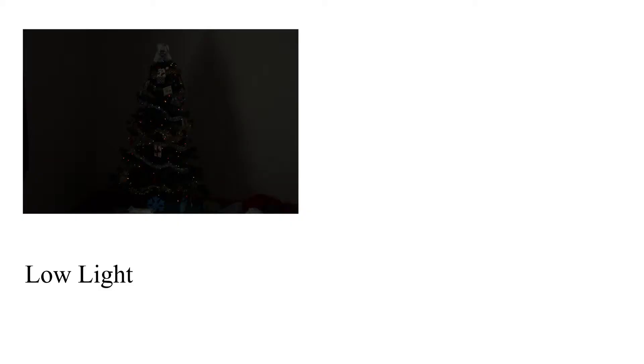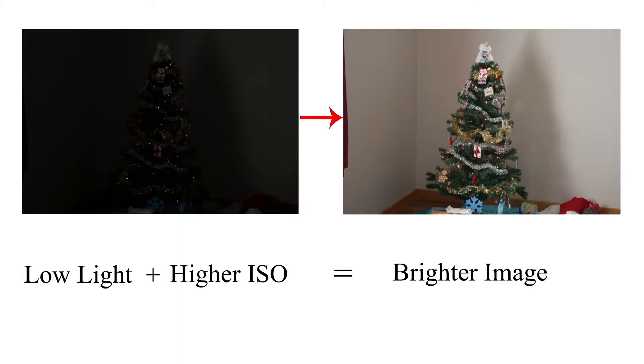Before digital, film was sold at different speeds. Those speeds were listed as ISO numbers. The higher ISO number your film was, the more sensitive it was to light. That meant that if you were shooting in low light, you could use a film with a large ISO number to pick up more detail without compromising things like shutter speed or aperture.